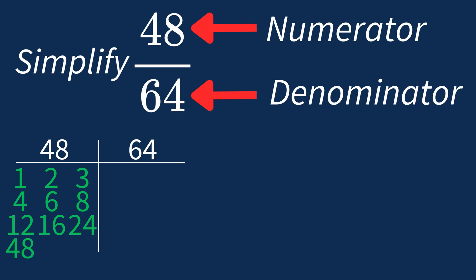For 64, the factors are 1, 2, 4, 8, 16, 32, and 64. So the largest common factor between 48 and 64 is 16.